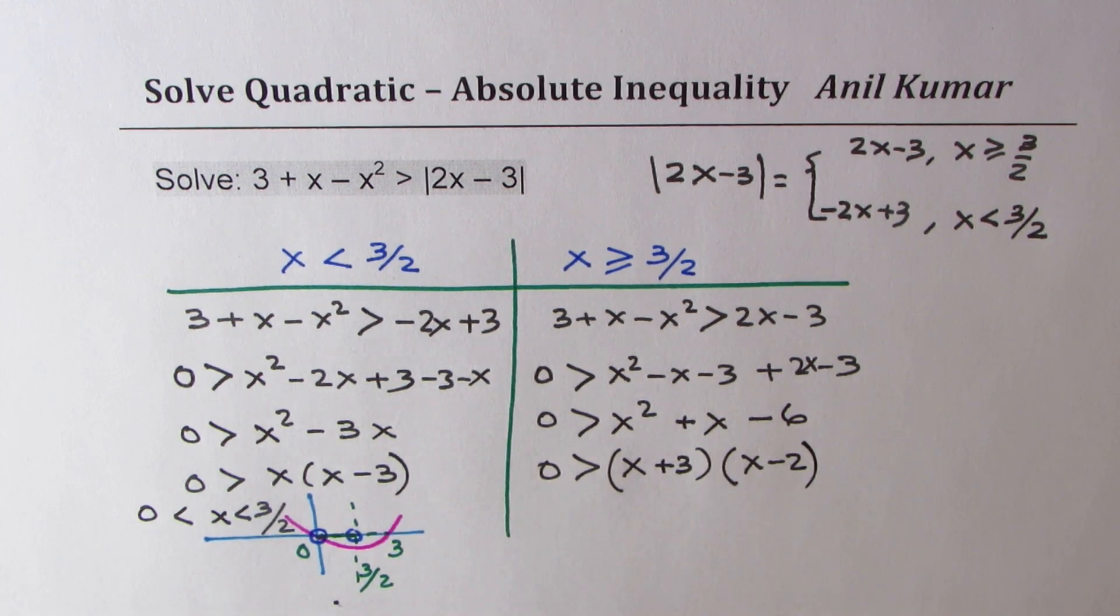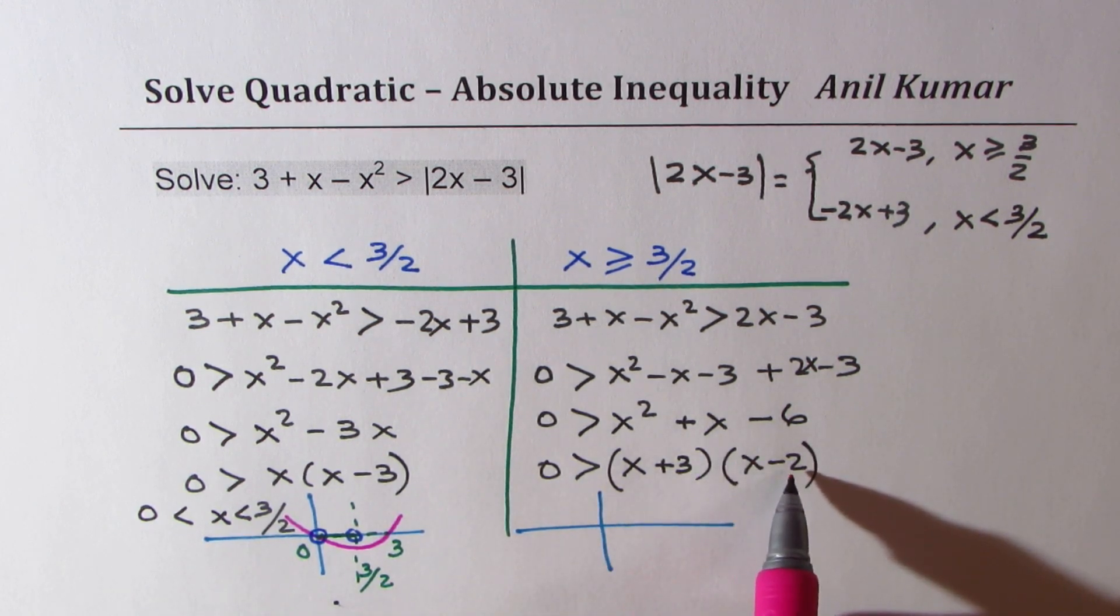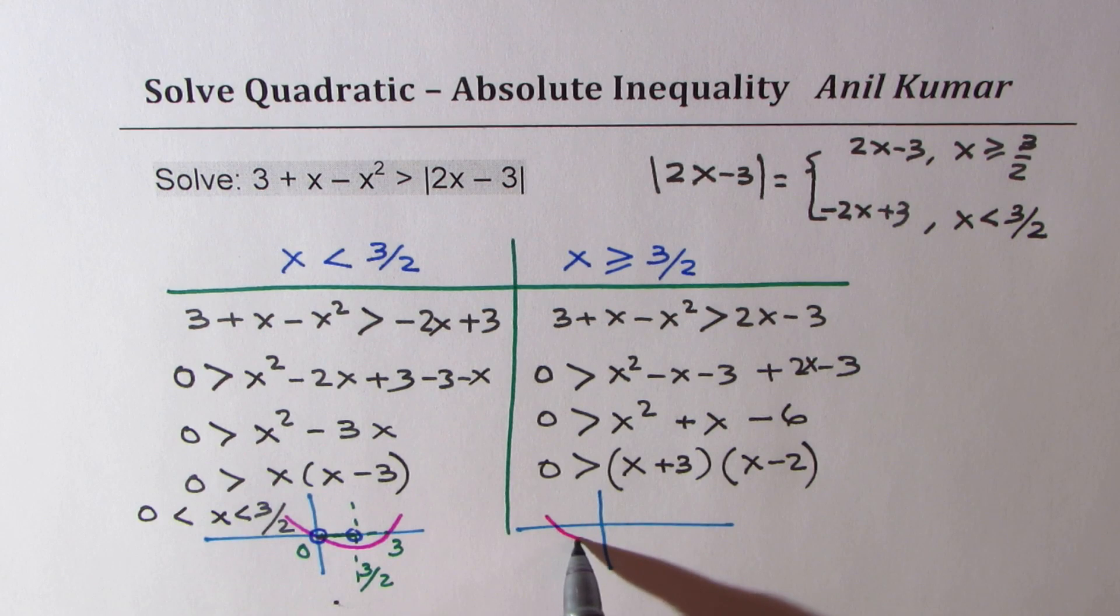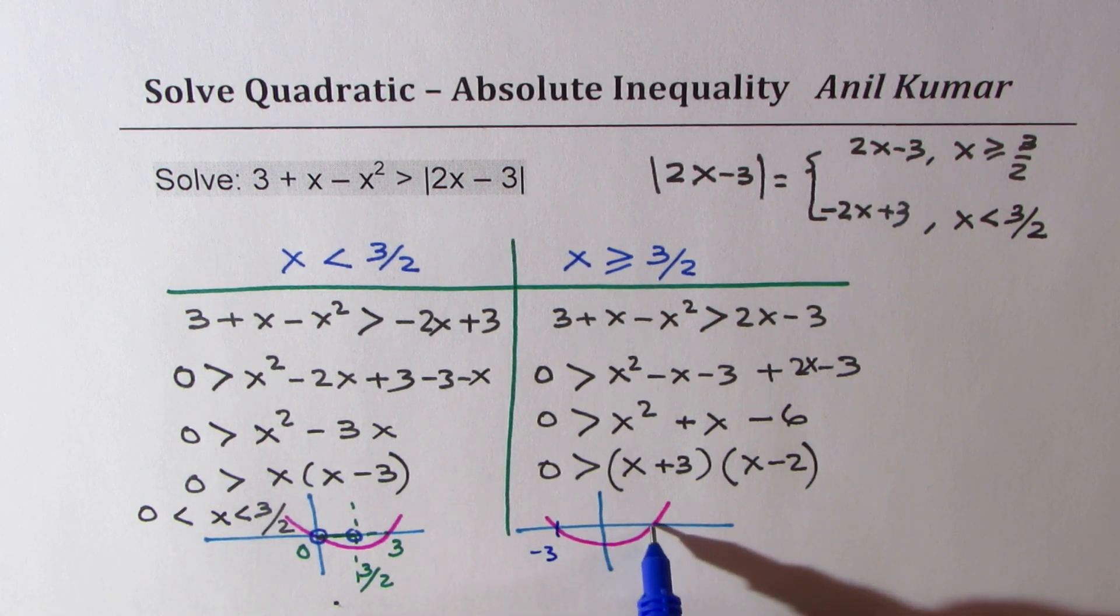Now, if you sketch this, sketching becomes easier than finding intervals and then solving. So we get here a parabola which has two zeros. One at minus 3, the other one has plus 2. So let's say kind of like this. So here, the zeros are at minus 3 and at plus 2.